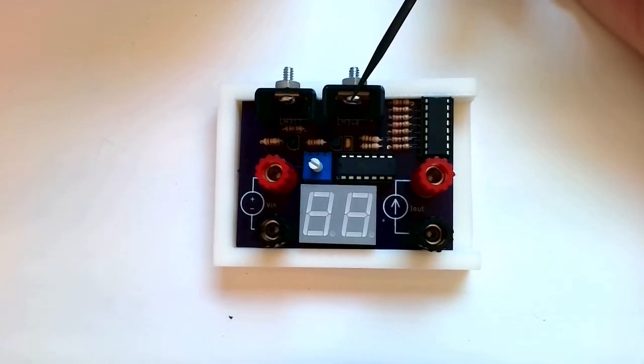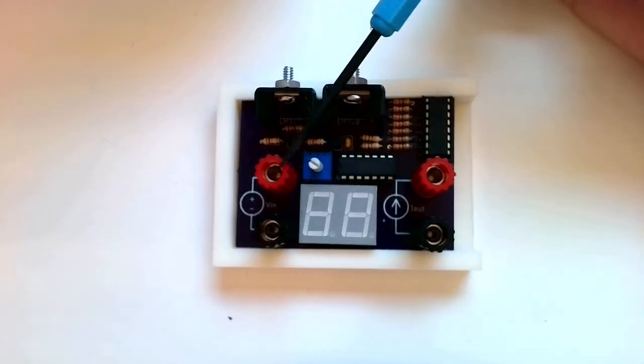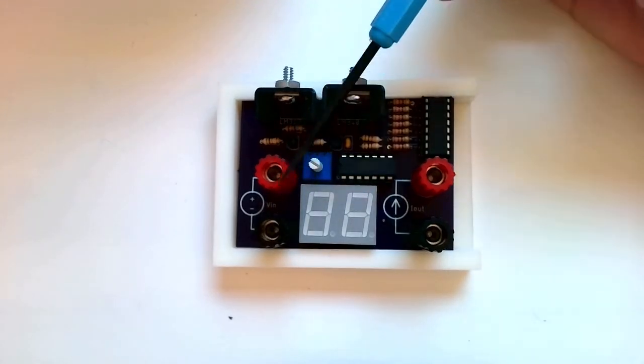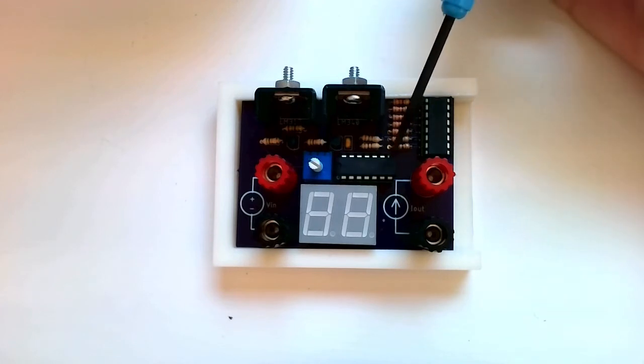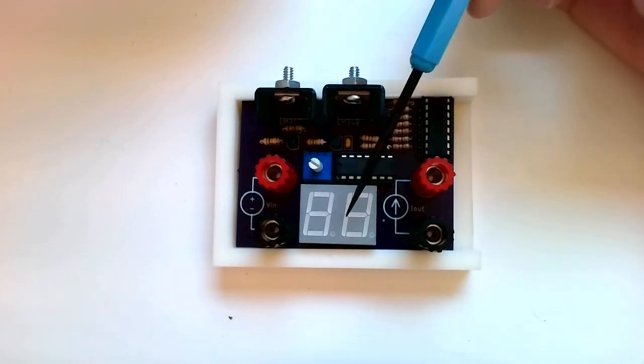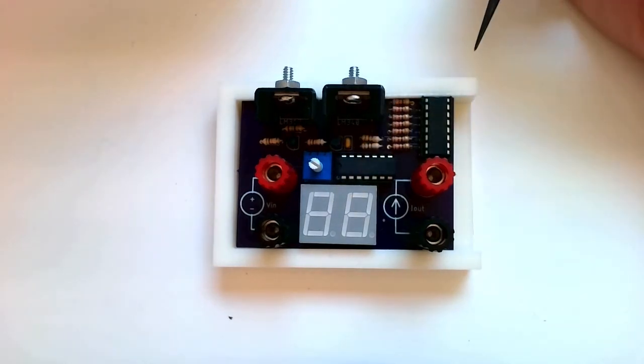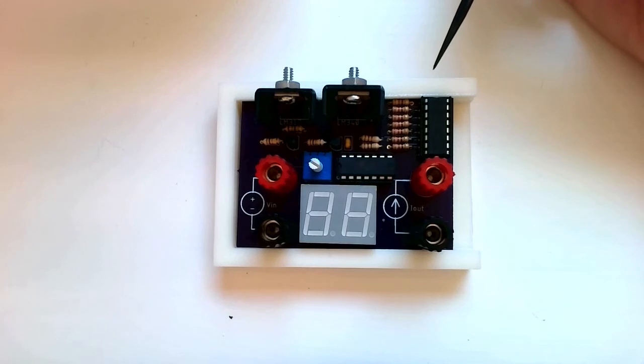This is a voltage regulator that takes whatever voltage is applied here, as long as it's greater than 5 volts, and uses it to control the microcontroller, which enables the seven segment display to give you a readout of how much current is flowing through this.